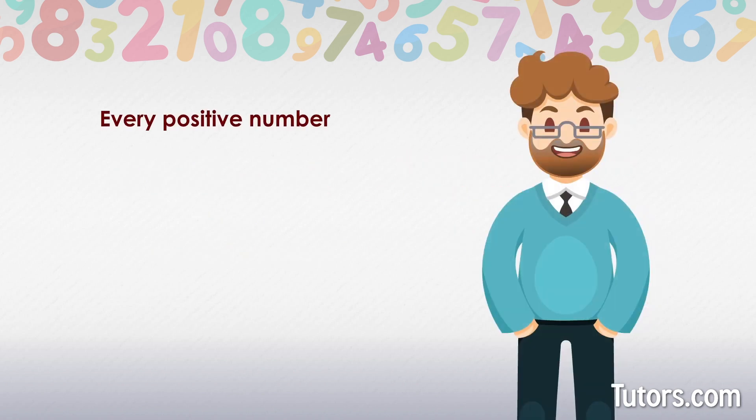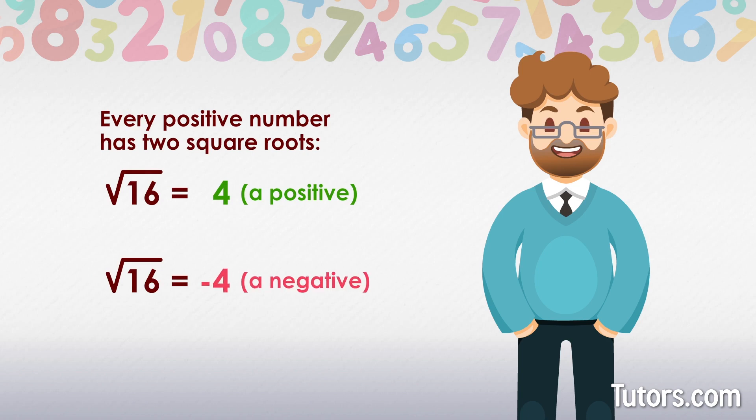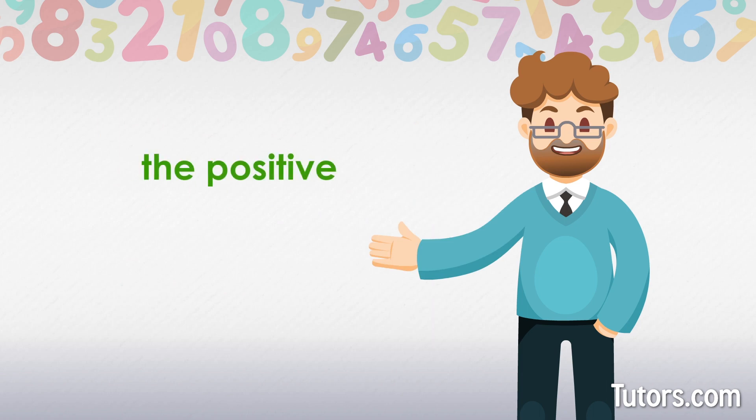Every positive number has two square roots, a positive and a negative. The positive square root is called the principal square root, and it is generally understood to be the one we are interested in finding. In this case, we want the positive square root of 169.